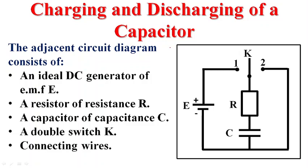In this video, our objective is to study the charging and discharging phenomena of a capacitor. To do this, we consider this circuit. This circuit is formed of an ideal DC generator or battery of EMF E, a resistor of resistance R, a capacitor of capacitance C, a double switch, and connecting wires.